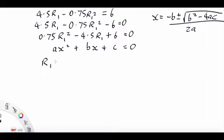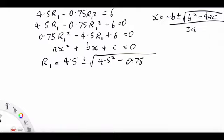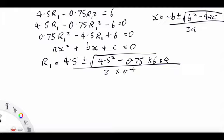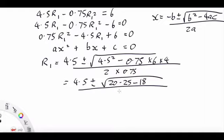So that gives us R1 equals 4.5 plus or minus square root of 4.5 squared minus 0.75 times 6 times 4 over 2 times 0.75. So that is 4.5 plus or minus 20.25 minus 18 over 1.5.